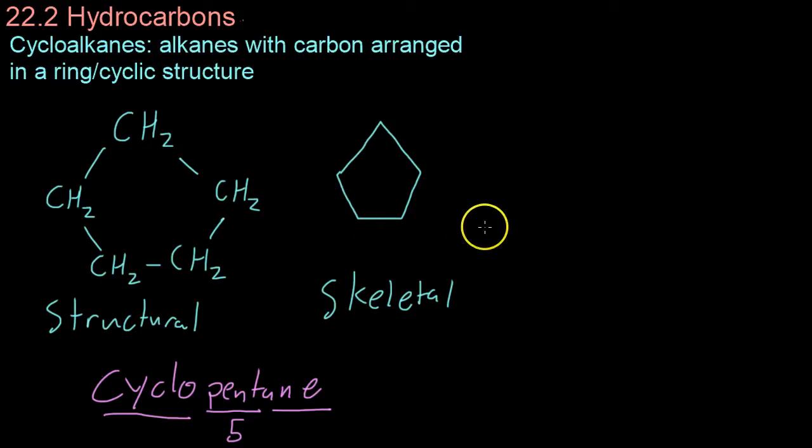And cyclo just means that it's arranged in a ring. So, you can draw that either with our normal structural diagram or a skeletal diagram. And basically, if you draw your pentagon, chemists will know that each of these corners is a carbon atom saturated with the two necessary hydrogen atoms to complete its four bonds.